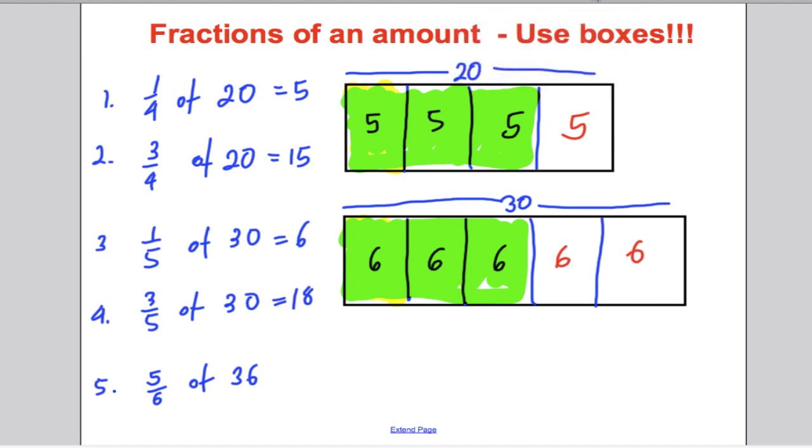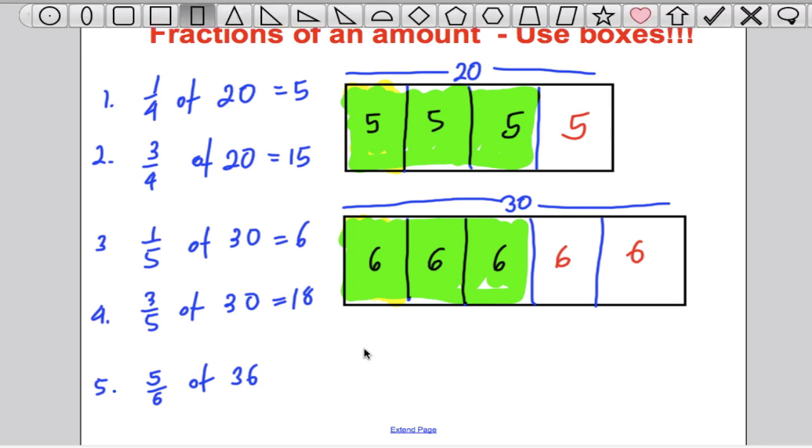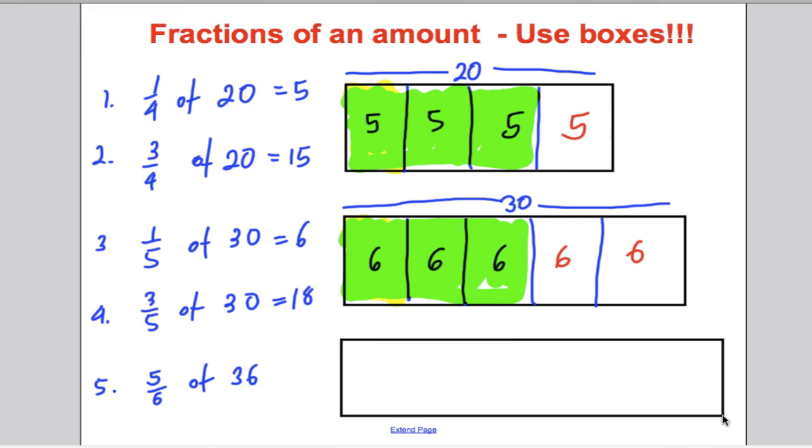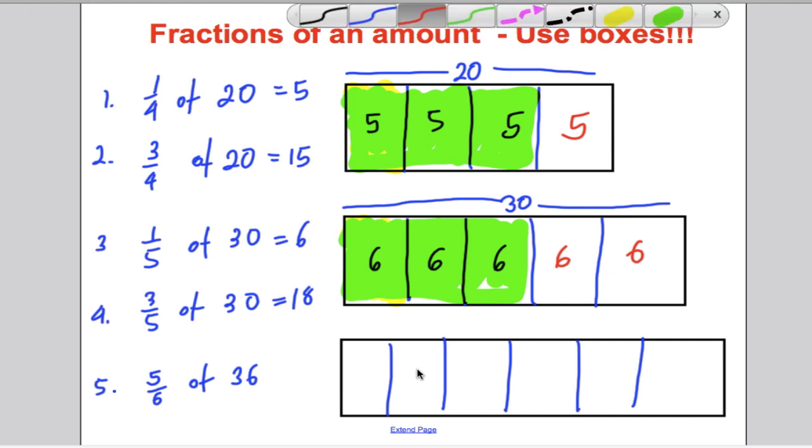The last one here. And the last one, we want five sixths of 36 in one go. So let's draw out 36. Let's box represent 36. Let's split into sixes. Think about what must go in each box. You can guess by trial and error. But maybe five, five, 10, 15, 20, 25, 30, no good. Six, 12, 18, 24, 30, 36. It must be six again, like above.